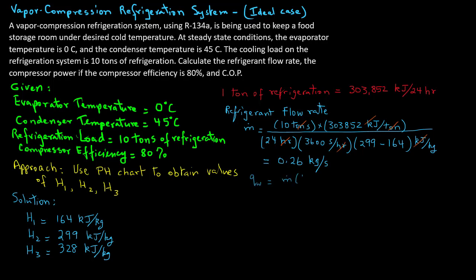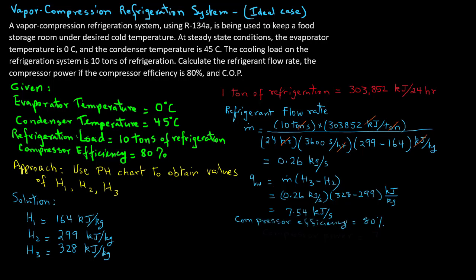The compressor power formula is mass flow rate times (H3 minus H2) for 100% efficiency. With a mass flow rate of 0.26 kg/s and H3 minus H2 equal to 328 minus 299 kJ/kg, we get 7.54 kJ/s at 100% efficiency. Since the compressor is at 80% efficiency, we divide by 0.8: 7.54 divided by 0.8 gives 9.43 kJ/s, which equals 9.43 kilowatts.